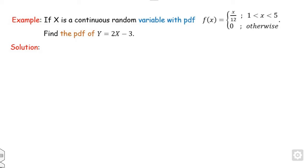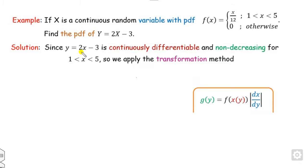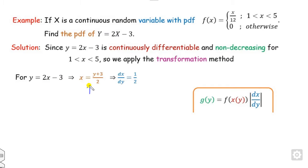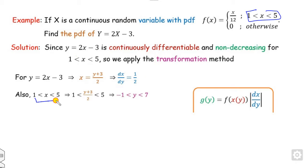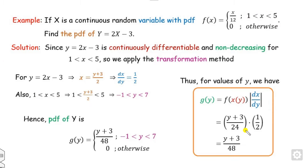Example 6: find the pdf of Y = 2X − 3 if X has a given pdf. The transformation is a linear polynomial, so it is continuously differentiable, and we can apply the method. Calculate x = (y+3)/2 from the transformation, giving dx/dy = 1/2. When x lies between 1 and 5, calculate the corresponding range of y. Substitute the value of x and dx/dy into the expression to obtain the pdf of Y.